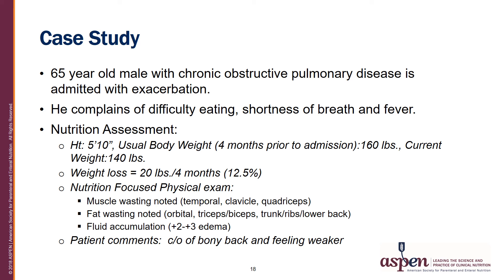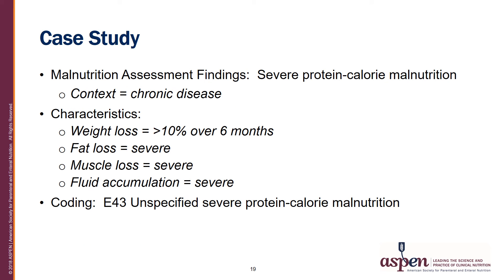Case study: A 65-year-old male with chronic obstructive pulmonary disease is admitted with an exacerbation. He complains of difficulty eating, shortness of breath, and fever. On nutrition assessment, the patient is 5 feet 10 inches tall. His usual body weight four months prior to admission was 160 pounds; his current weight is 140 pounds, representing a 12.5% weight loss over four months. On nutrition-focused physical examination, muscle wasting was noted at the temporal, clavicle, and quadriceps areas. Fat wasting was noted at the orbital, triceps, biceps, trunk, ribs, and lower back. The patient was found to have 2 to 3-plus edema, and he reports a bony back and feeling weaker.